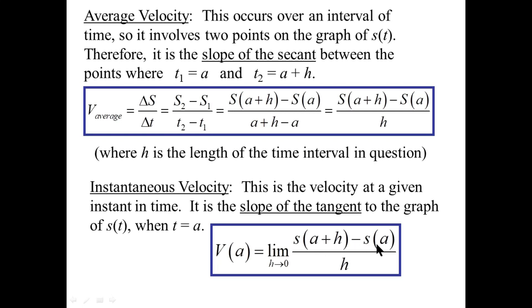So our velocity instantaneous will be the limit as h approaches zero of s of a plus h minus s of a over h. Simply renaming things. This is the exact formula that we did in the previous video. It's just that there it said f of a plus h minus f of a.